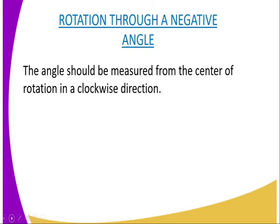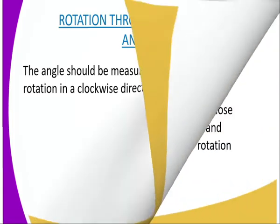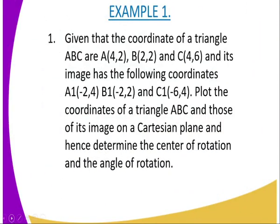There is an example here. Given that the coordinates of a triangle ABC are A(4, 2), B(2, 2), and C(4, 6), and its image has the following coordinates — A1(negative 2, 4)...